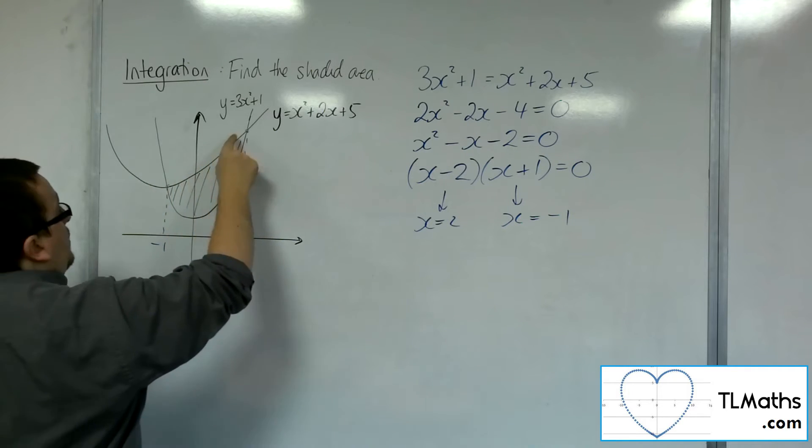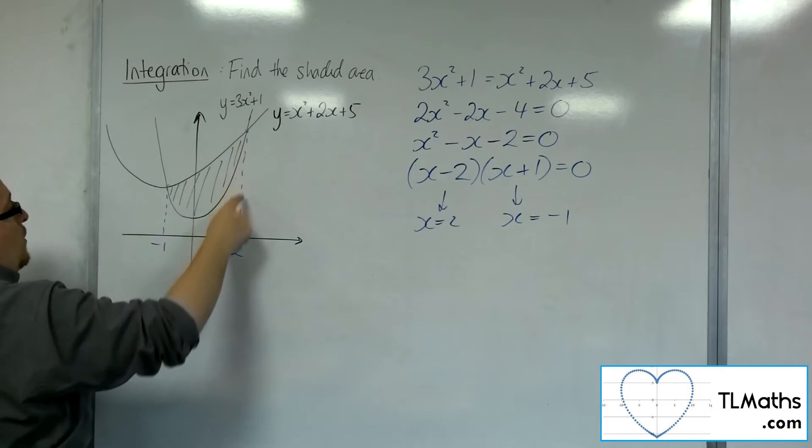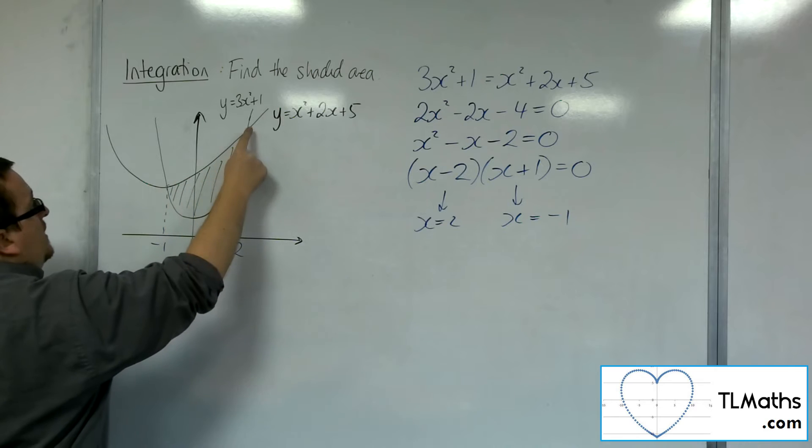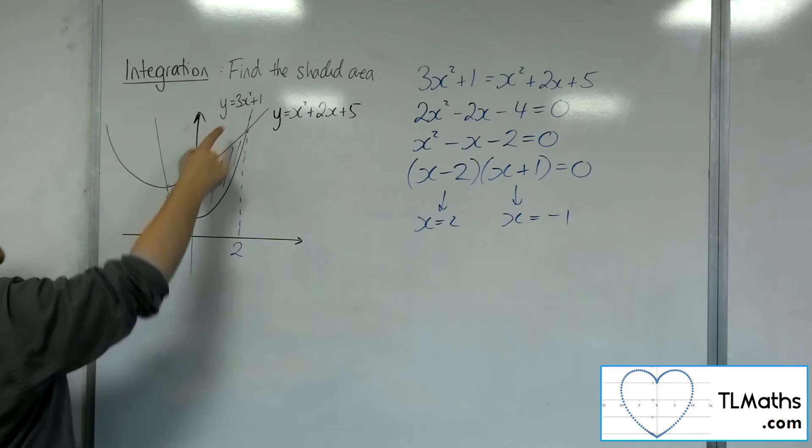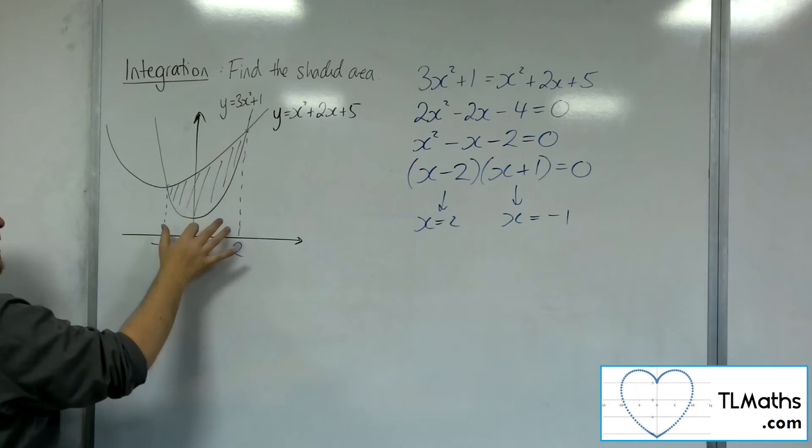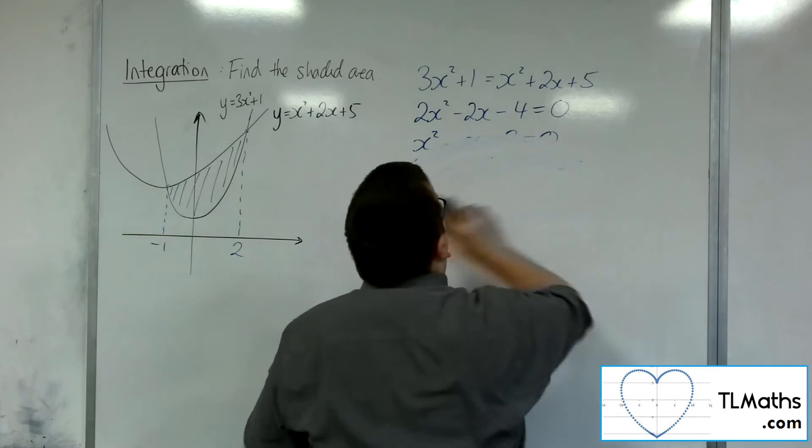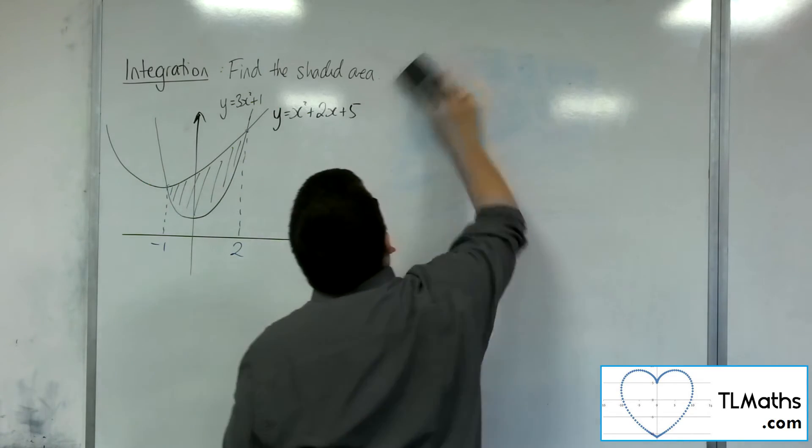So the y equals x squared plus 2x plus 5. If I could integrate that between minus 1 and 2, I will get that whole area there. And then if I integrate the 3x squared plus 1 between minus 1 and 2, I will get that area below. And I can then subtract one from the other. So that is my plan of action.